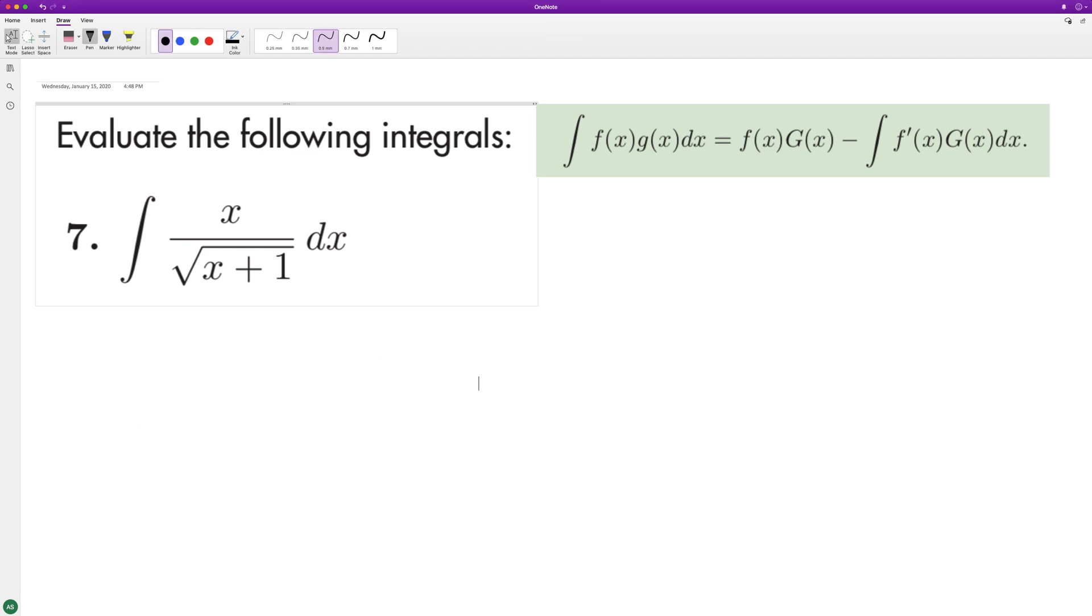To integrate the following problem, we're going to use integration by parts. So to do that, we're going to set... excuse me, f of x. There's a couple ways we can do this, but g of x is going to be equal to... rewrite this as (x+1) raised to the negative one-half.